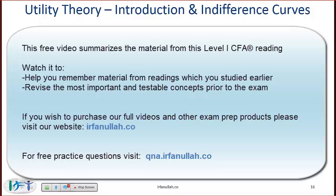The axioms or assumptions of this theory are: number one, complete preferences. This means that a consumer will always be clear which bundle he prefers. A consumer will say 'I prefer A,' or 'I prefer B,' or that A and B are equally preferred. A consumer will not say 'I don't know' — he will always have an opinion when talking about two bundles.